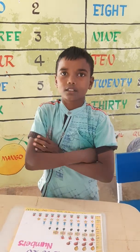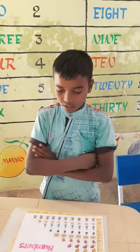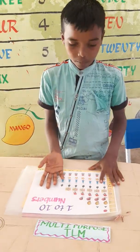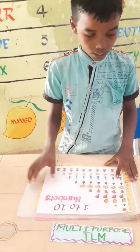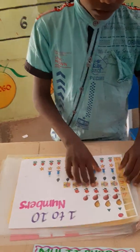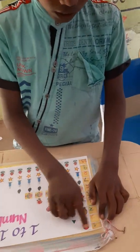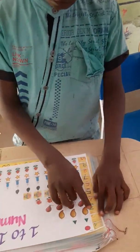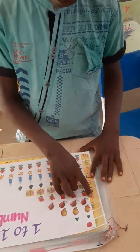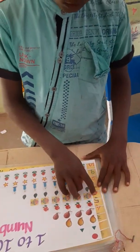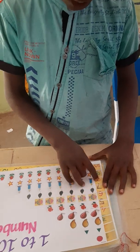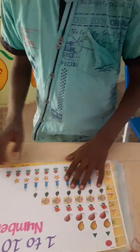My name is Esther. This is multi-purpose DLM of first class. Like this: 1, 2, 3, 4, 5, 6, 7, 8, 9, 10.